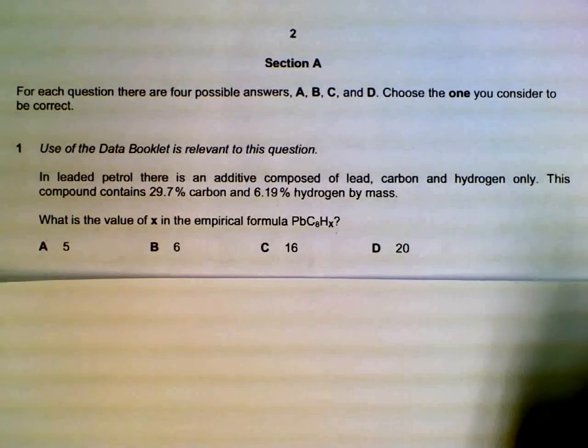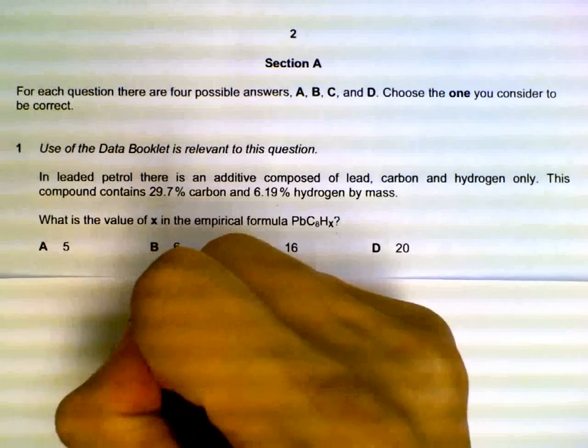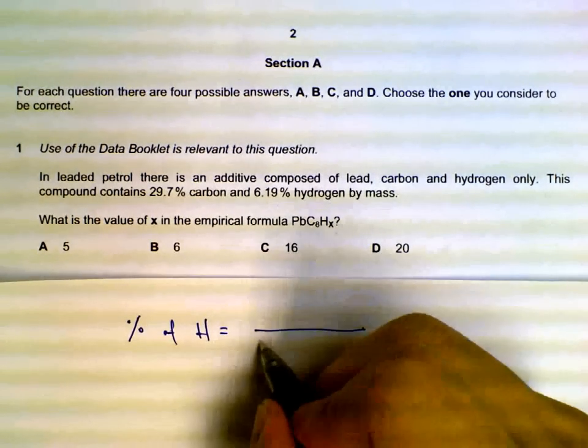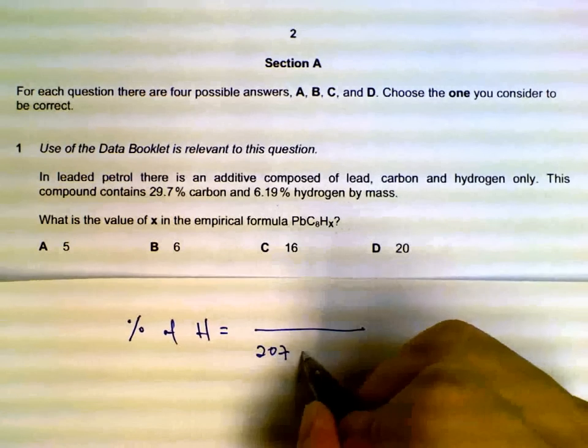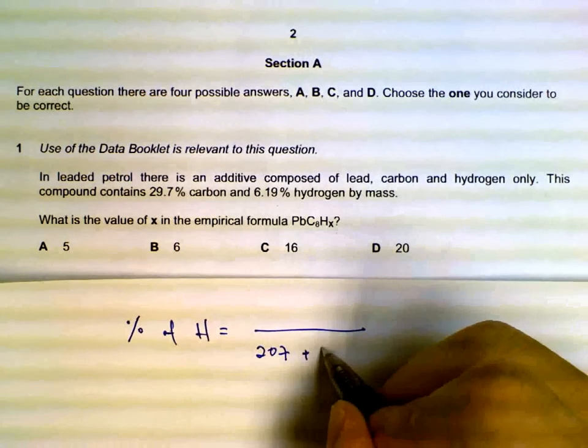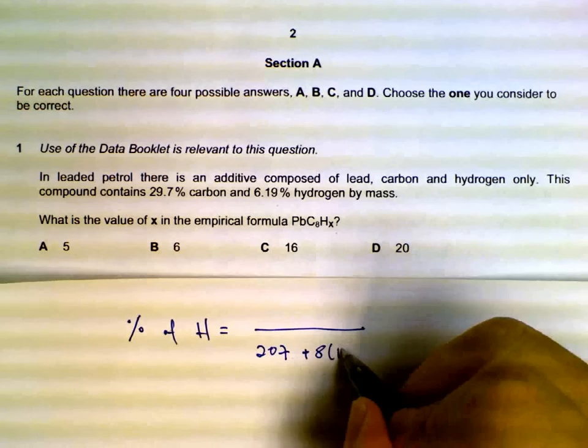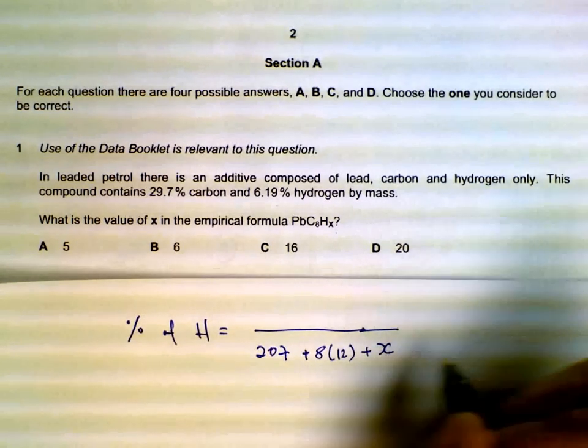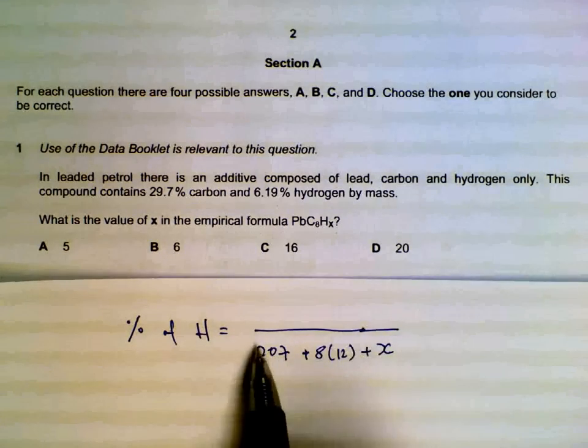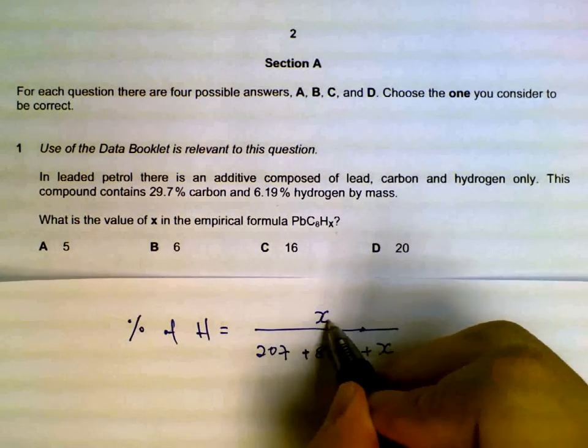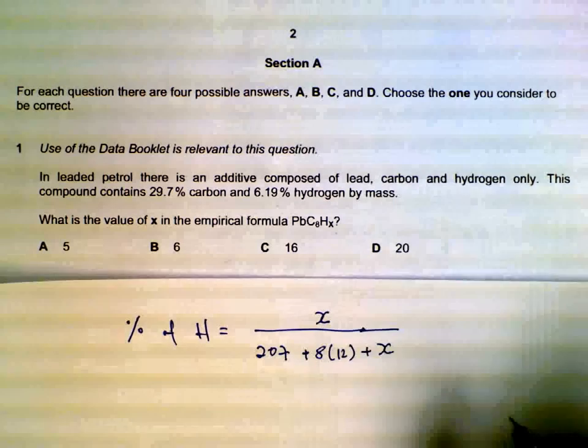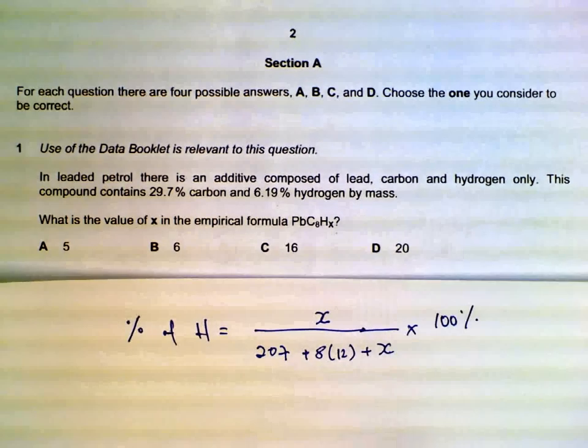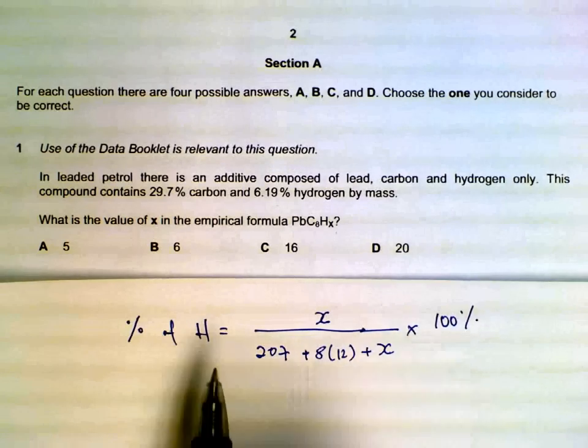If you are confused, that means we can try the method of trial and error. So percentage of hydrogen, we have to find out the total first. Looking at the data booklet, 207 for lead, carbon there's eight of them, and then we don't know how much x is, multiplied by one. So this is the total MR and the amount contributed by hydrogen will be x multiplied by one.